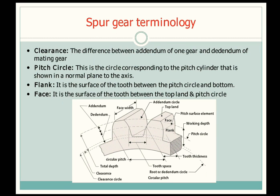Next is clearance. It is the difference between the addendum of one gear and the dedendum of the mating gear. In this figure, only one gear is shown and the mating gear is not shown, but the clearance is shown by two dotted lines or dotted arcs. It is the difference between the addendum of the mating gear and the dedendum of the present gear.